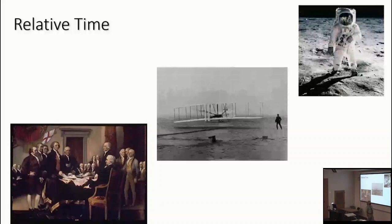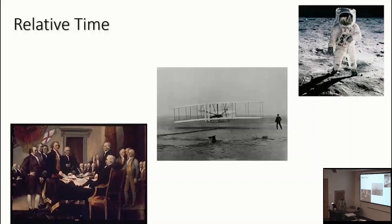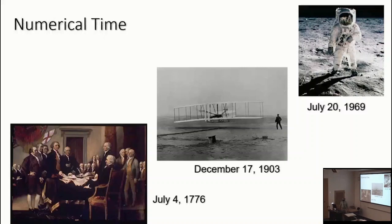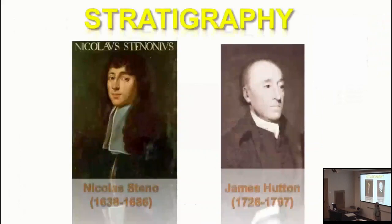Or the sequence of events: the signing of the Declaration of Independence and creation of the United States, then the first powered flight at Kitty Hawk by the Wright Brothers, then the Apollo 11 moon landing. You could probably remember the sequence — the Wright Brothers were American citizens, so there had to be a USA first, and the astronauts were formerly test pilots, so someone had to have invented planes before they could be test pilots. Our ability to recover relative sequence in time was developed centuries before our ability to figure out numerical deep time.